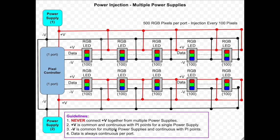The minus V is common for multiple power supplies and continuous for multiple power injection points. Notice that the minus V and the minus V from the power supplies are connected together. They are common and continuous and can be injected at multiple places. Data is always continuous per port. Meaning the data goes from this port all the way to the last pixel.